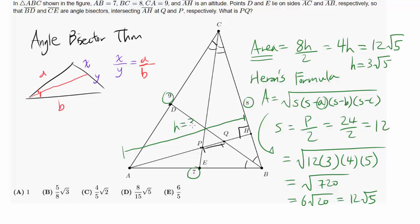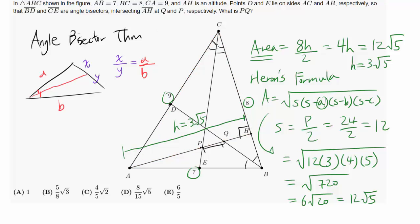Now we know the full length AH equals 3√5. To find PQ, let's concentrate on specific triangles and apply the angle bisector theorem to discover partial lengths along AH. Let's look at triangle ACH — the one highlighted in red. In triangle ACH, we have angle bisector CE passing through and intersecting at P. We can apply the angle bisector theorem, but we need to know CH first.